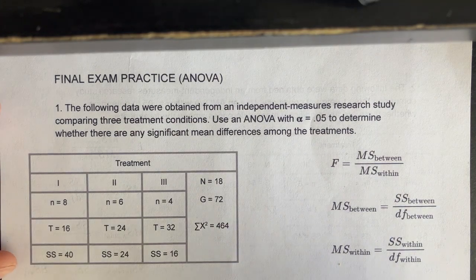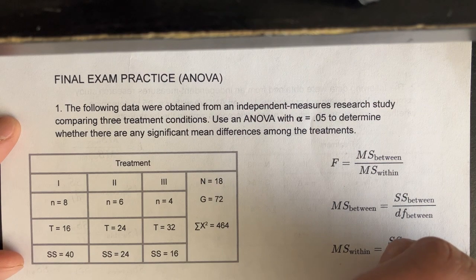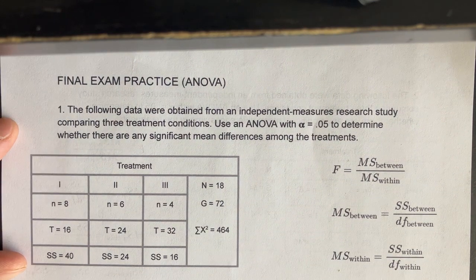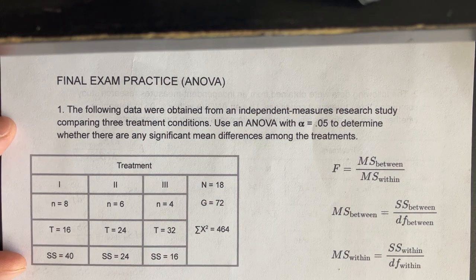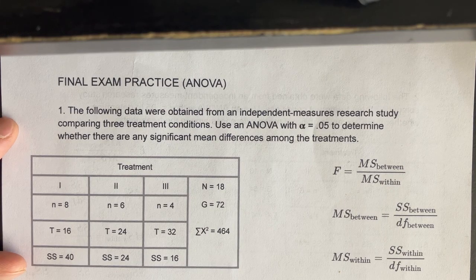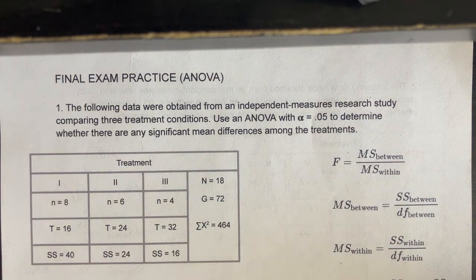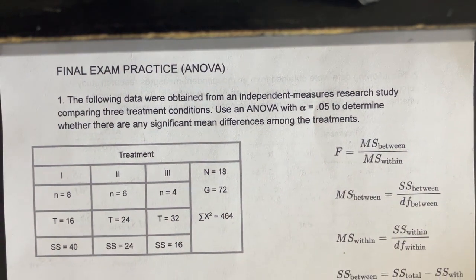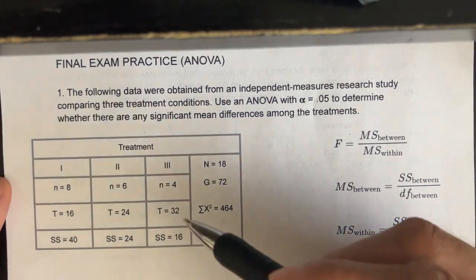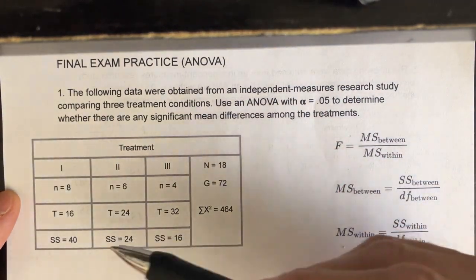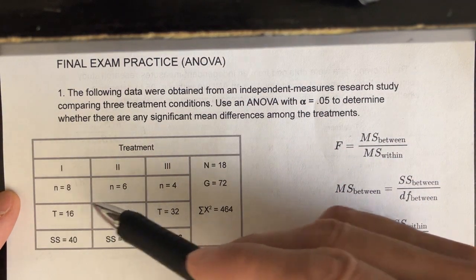This is an example of an ANOVA. The question reads: the following data were obtained from an independent measures research study comparing three treatment conditions. Use an ANOVA with alpha equal to 0.05 to determine whether there are any significant mean differences among the treatments. Looking at the data, I can see there are three different groups — group one, two, and three — with sample sizes of eight, six, and four.